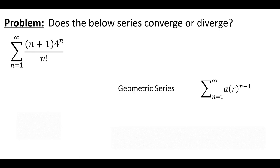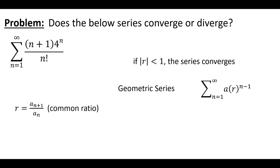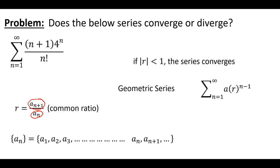The geometric series is shown here. Recall this series converges if the absolute value of R, our common ratio, is less than one. R is the common ratio — the ratio between a subsequent term and the term before it. So for a typical sequence, R is just what we multiply to get from A1 to A2, or from A2 to A3. Unfortunately, with our sequence here, there isn't a common ratio you can multiply to get from one term to the next — it varies, so we don't have a common ratio R.